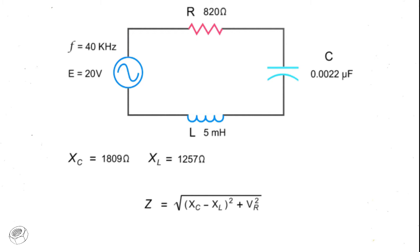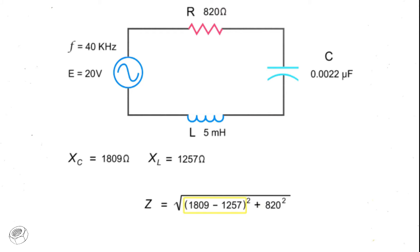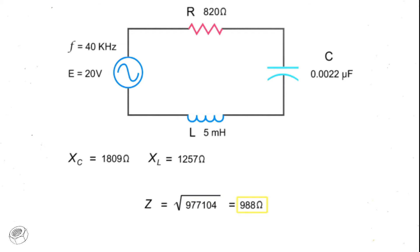To calculate the total impedance of the circuit, take the square root of the capacitive reactance minus the inductive reactance, squared, added to the resistance of the resistor squared. Thus, taking the square root of 1,809 ohms minus 1,257 ohms squared plus 820 ohms squared gives you 988 ohms.